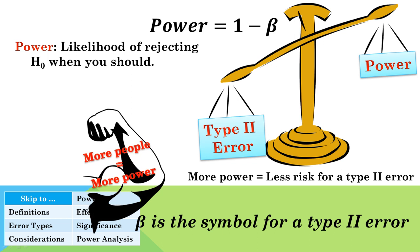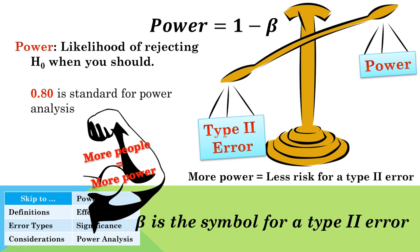Logically, power increases as the sample size increases, since you have collected more information, which makes it easier to correctly reject a null hypothesis. Other factors, including the effect size and significance level, also influence power. Usually, power is set at 0.8 or greater before a study begins, meaning that you should have an 80% or greater chance of finding a statistically significant difference when there is one. This value is used to calculate the needed sample size for a study before it begins.